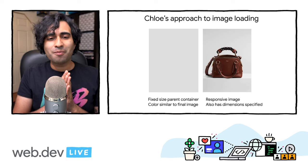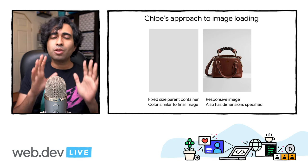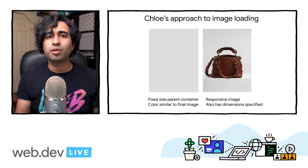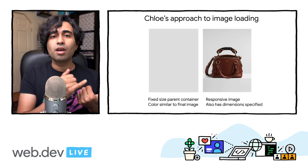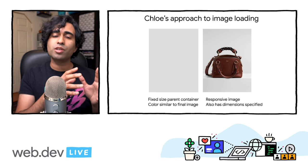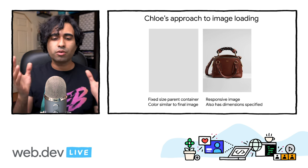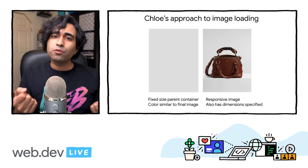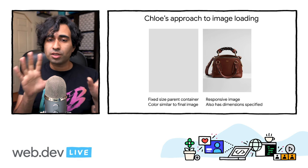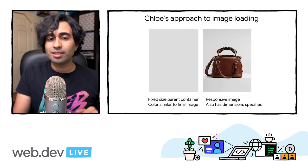They have a parent container with a color similar to the final image being loaded. Lazy loading strategies like this — where you have a preview of what's finally going to be shown — are sometimes referred to as low quality image placeholders. You can use a predominant color from the final image, a low-resolution image, or something like a 1×1 or 10×10 pixel image. These don't strictly improve LCP, but they do improve perceived performance. Chloe also used responsive images and set dimensions on their images to avoid CLS.